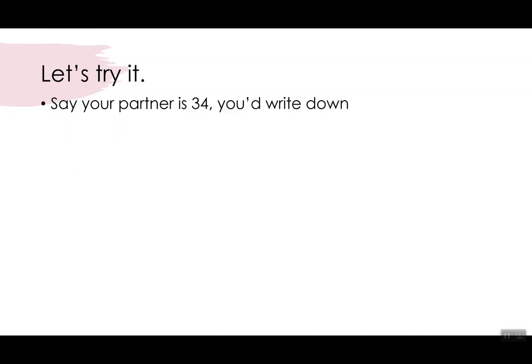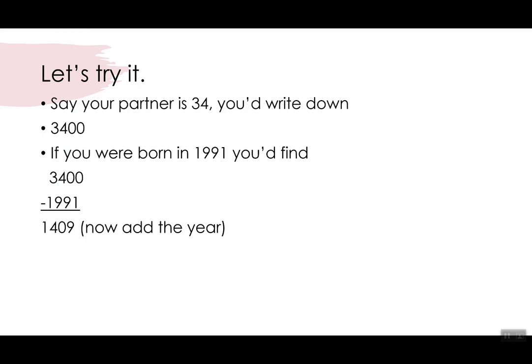So let's try it. Let's say your partner's 34. We're going to write down 3400, so that age followed by two zeros. And let's say you're born in 1991, so we're going to take 3400 subtract 1991 and we get 1409. Now we're going to add the year which is 2021 and we get 3430.